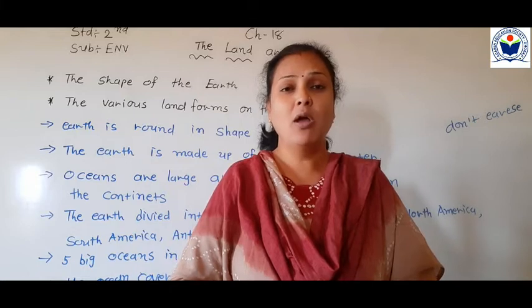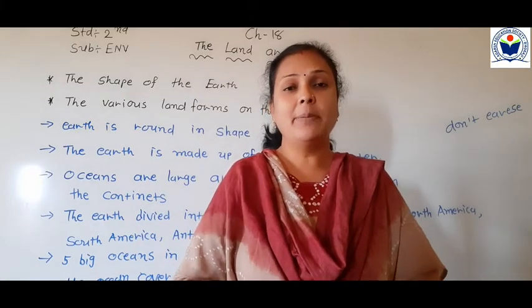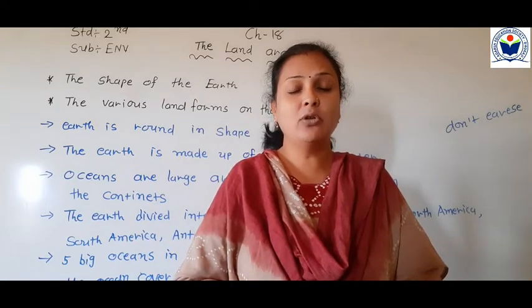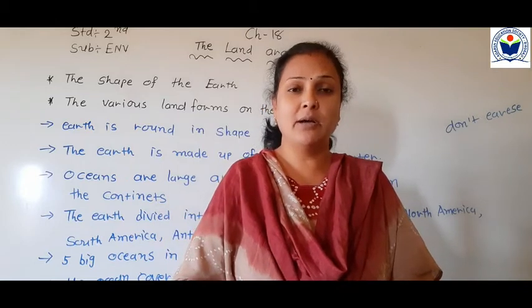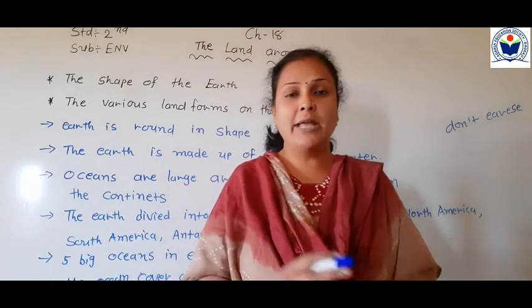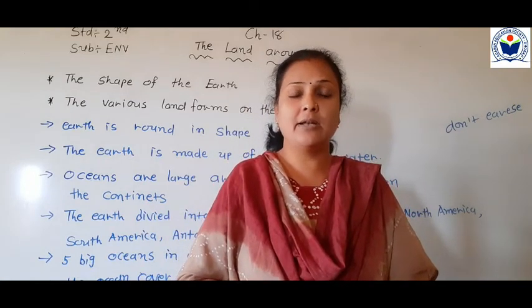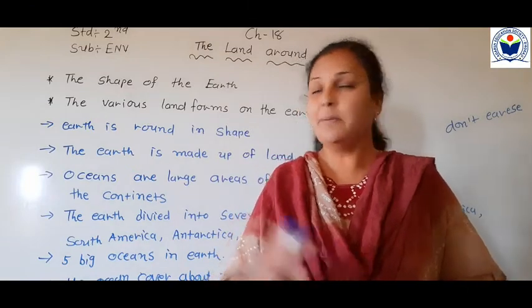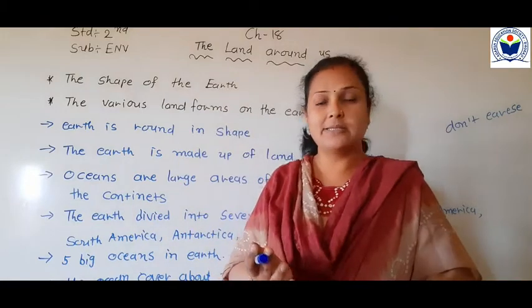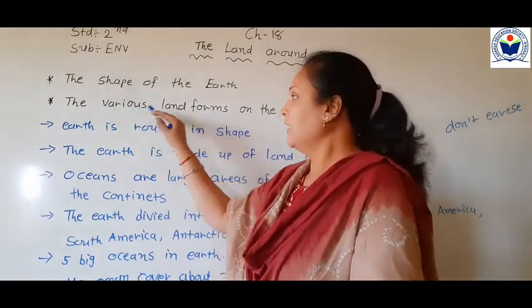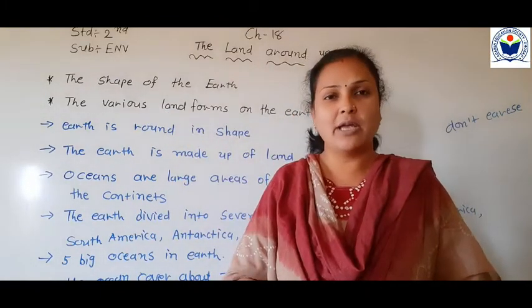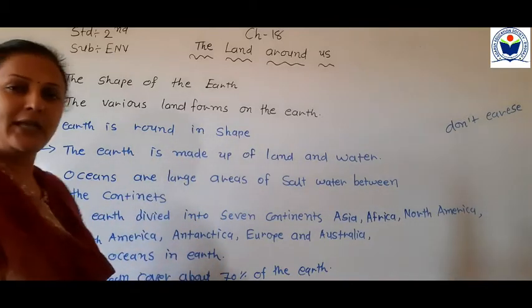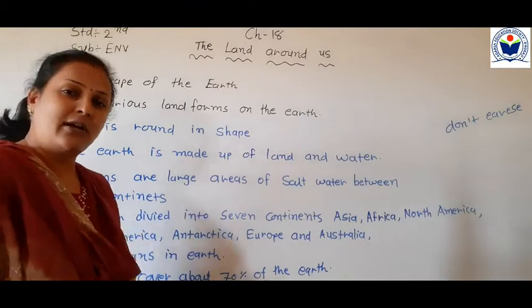We know that on earth there is land and water, but the land is not the same everywhere — it is of different types. Somewhere the land is plain, and somewhere it is raised, like mountain areas. On plain land we can build houses and buildings, but in raised or mountain areas we cannot build houses, buildings, or factories. So in this chapter we will learn the shape of the earth — its 'aakaar' (shape) — and various landforms.